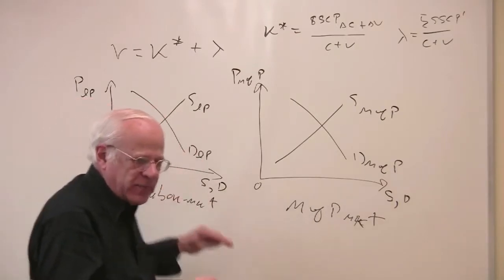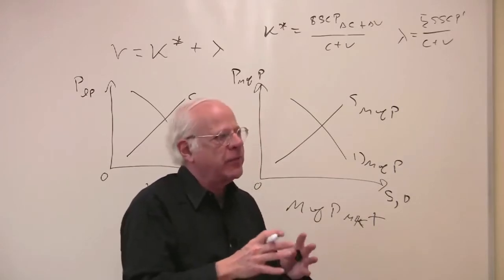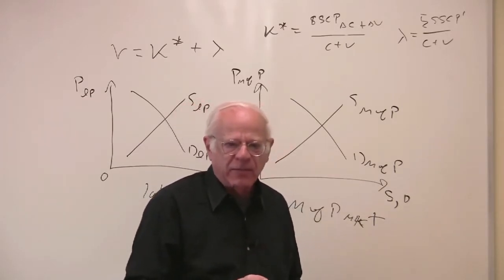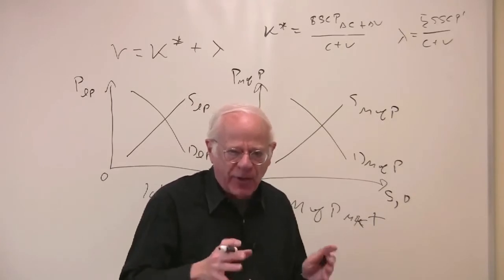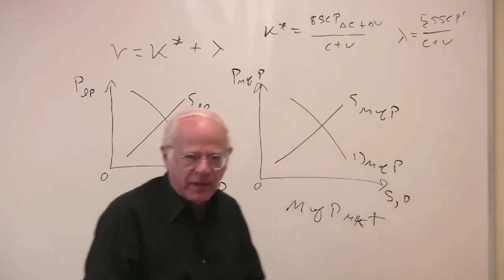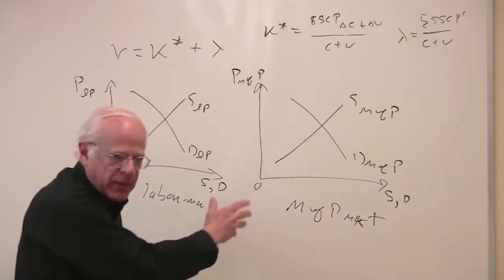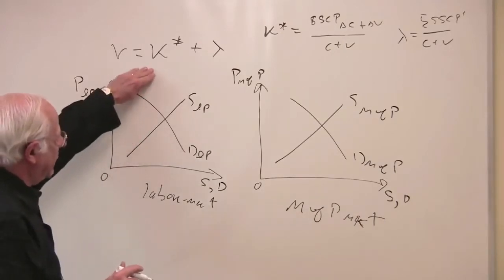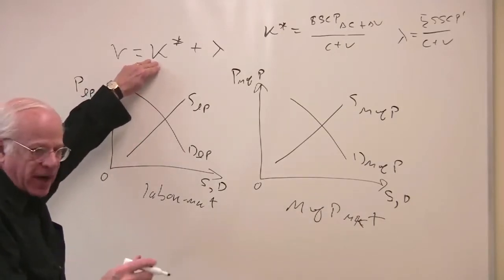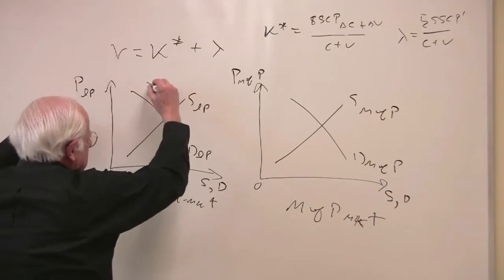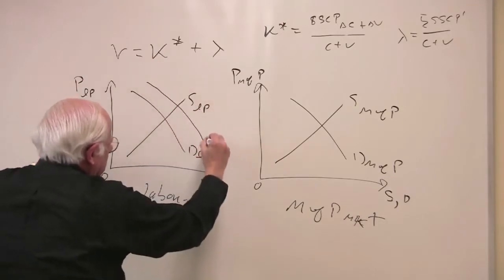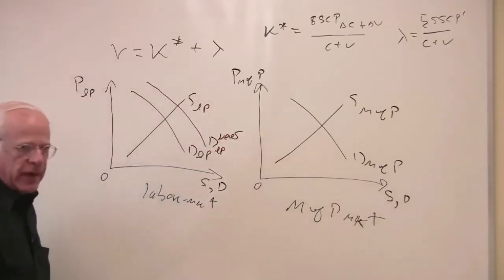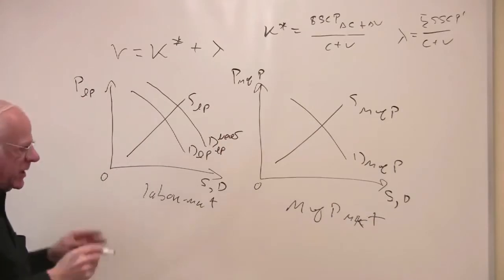Marx spends some time in Volume 3 examining supplies and demands of a variety of different markets. He's well aware of the supply and demand analysis that we have on the whiteboard. We have K-star expanding, which means the demand for labor power shifts to the right — that's an expansion.